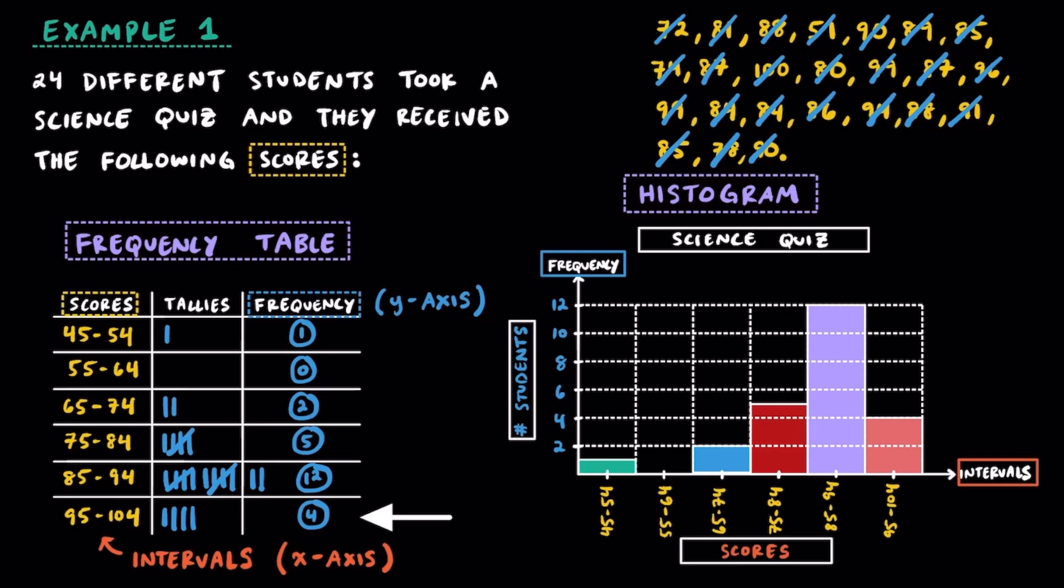And for our last interval, there were 4 students that got between a 95 and 104, so draw a bar up to the 4 on top of this interval.